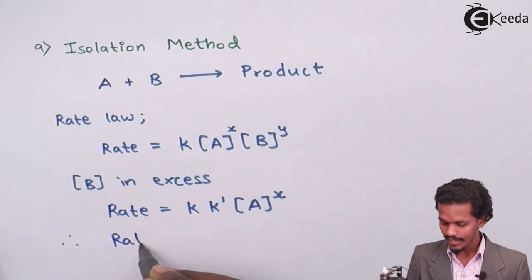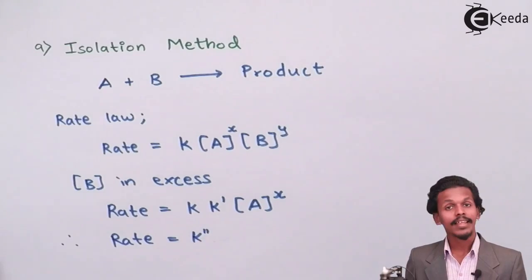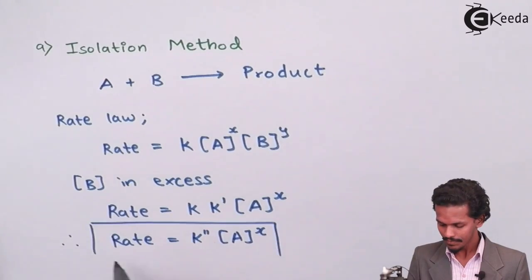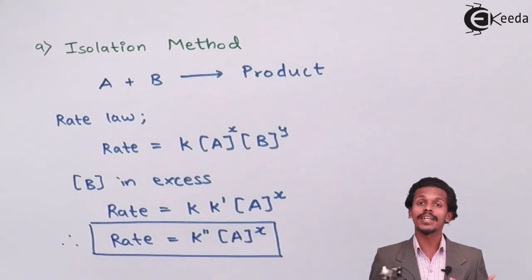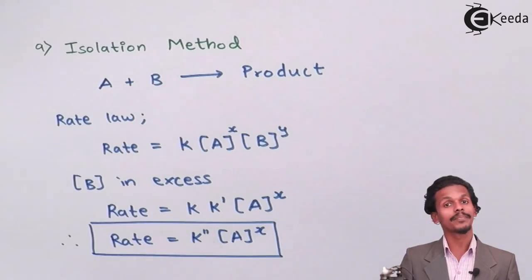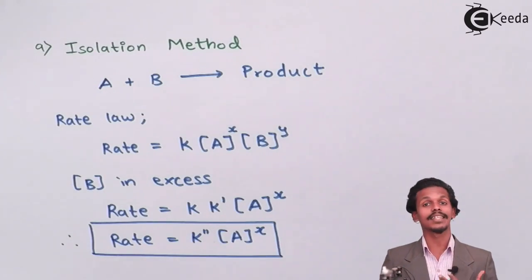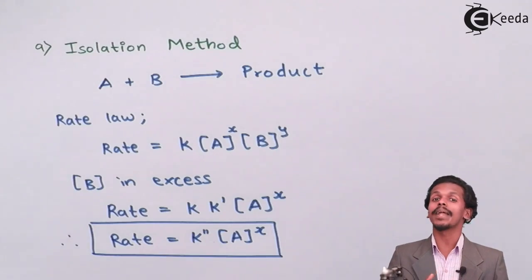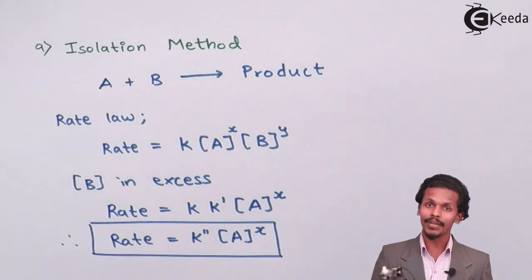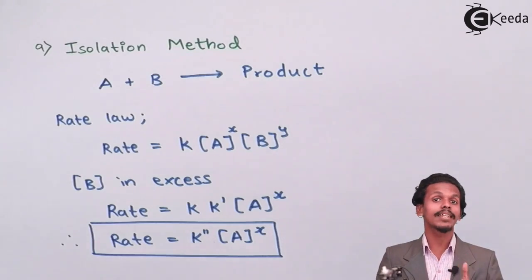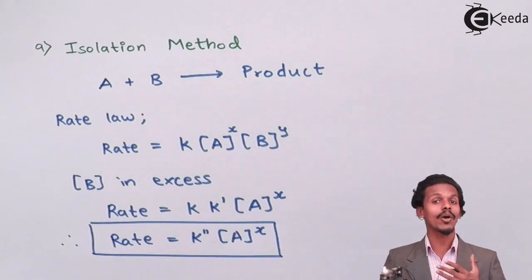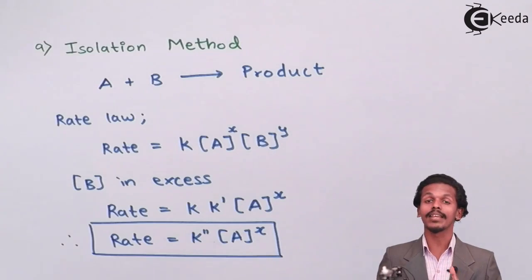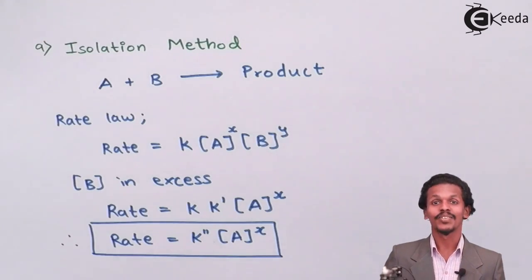Since constant times constant is still a constant, the rate becomes K-double-dash times A raised to X. By this method we can determine the value of X. Once X is known, we can also determine Y. To do that, we keep the concentration of B as it is and instead take the concentration of A in excess.